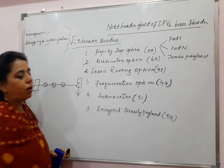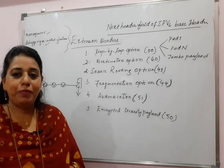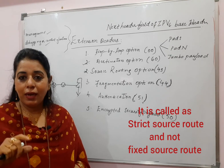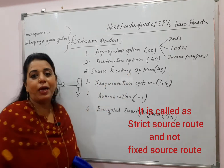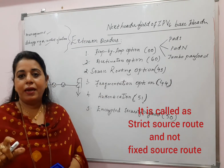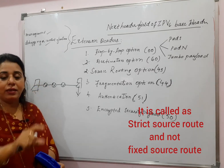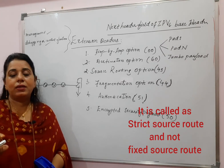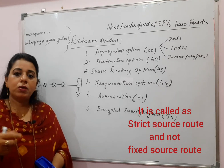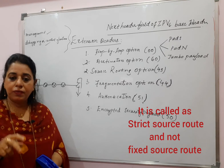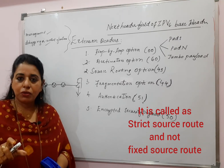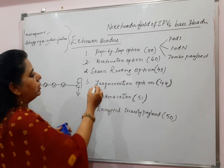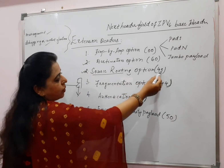The third extension header is the source routing option, with code 43. Source routing was present in IPv4 as well, under two different types: fixed source route and loose source route. In fixed source route, the source decides that the datagram must visit only those routers specified in the packet. In loose source route, the datagram must visit the listed routers but can also visit other routers along the way. Both concepts are combined in the source routing option of IPv6.